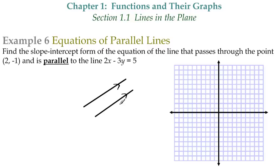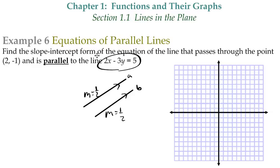One of the properties of parallel lines is this: if the slope of line A is 1/2, then what does the slope of line B have to be if these two lines are parallel? 1/2, right. So we know that this equation and the new equation we're going to find — both of their slopes have to be the same.